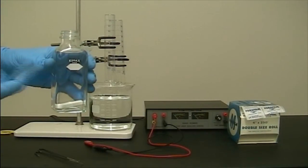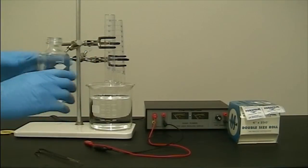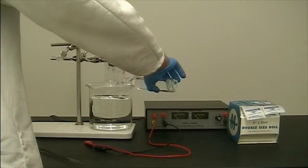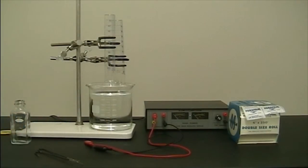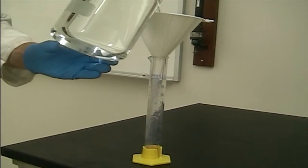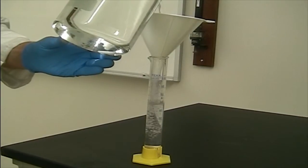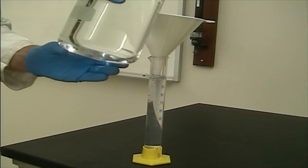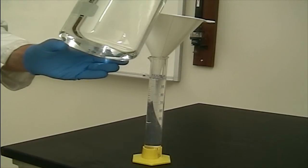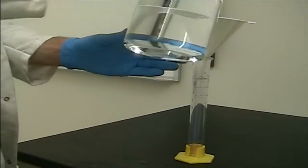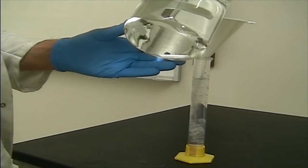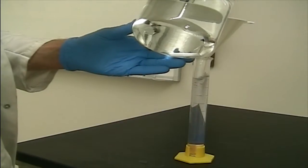150 milliliters of 5 normal aqueous sodium hydroxide was then added to the beaker, and we waited about 3 minutes for the ions to disperse into solution. To fill the graduated cylinders with sodium hydroxide solution prior to electrolysis, each graduated cylinder was fitted with a funnel and was then filled nearly to the brim with sodium hydroxide solution taken from the beaker.